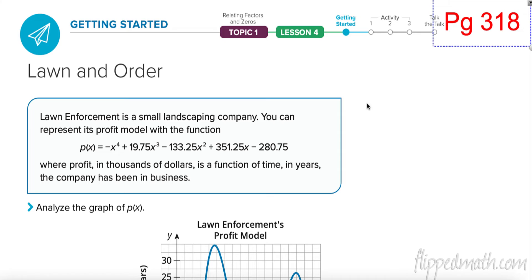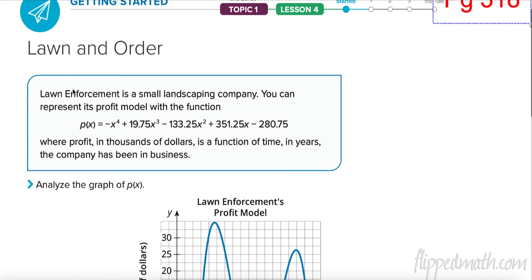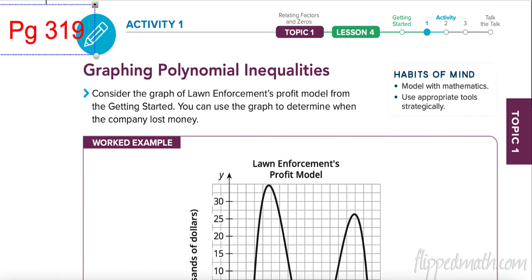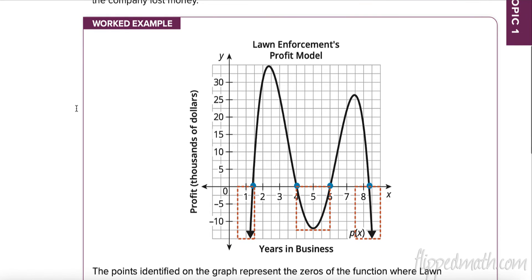On page 318, here is a situation. We have law enforcement, and you can represent its profit model with this function, where profit is in thousands of dollars and it's a function over time. We're going to look at that and graph it. It was easy to see when we had a straight line, but now we don't — we have quadratics, quartics, all these fun things.